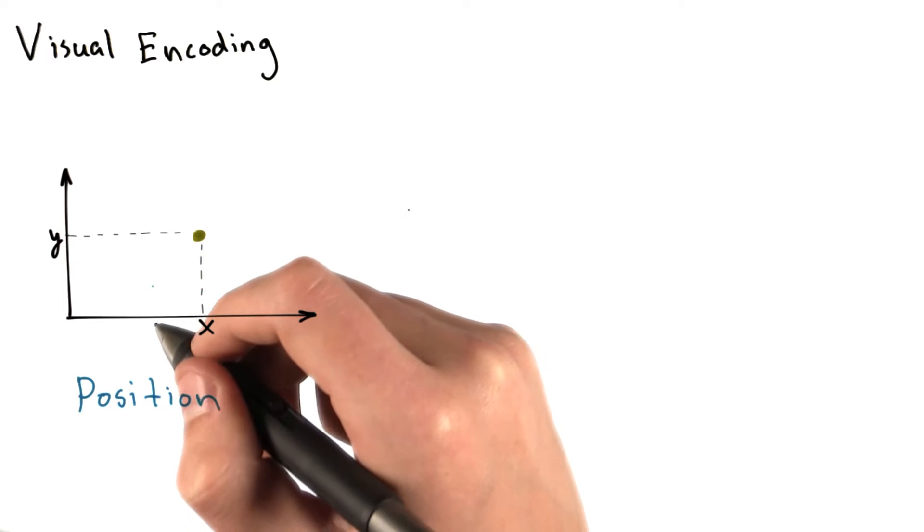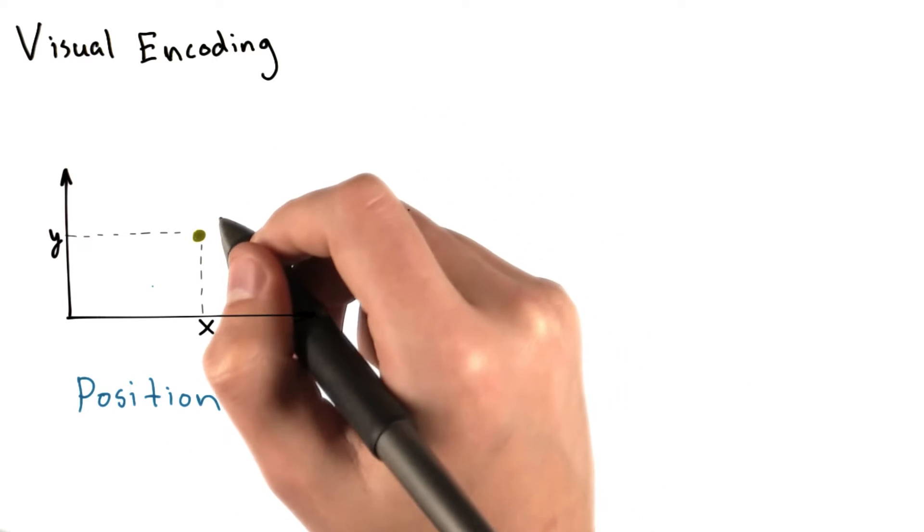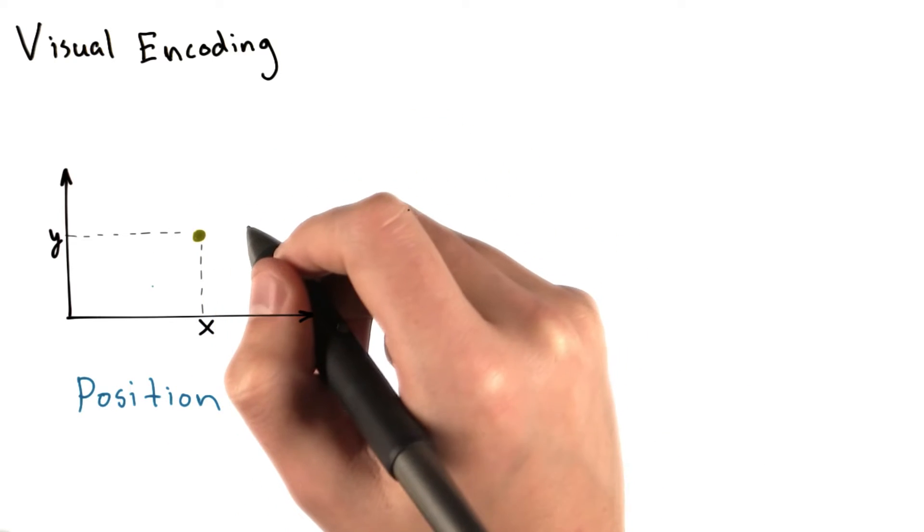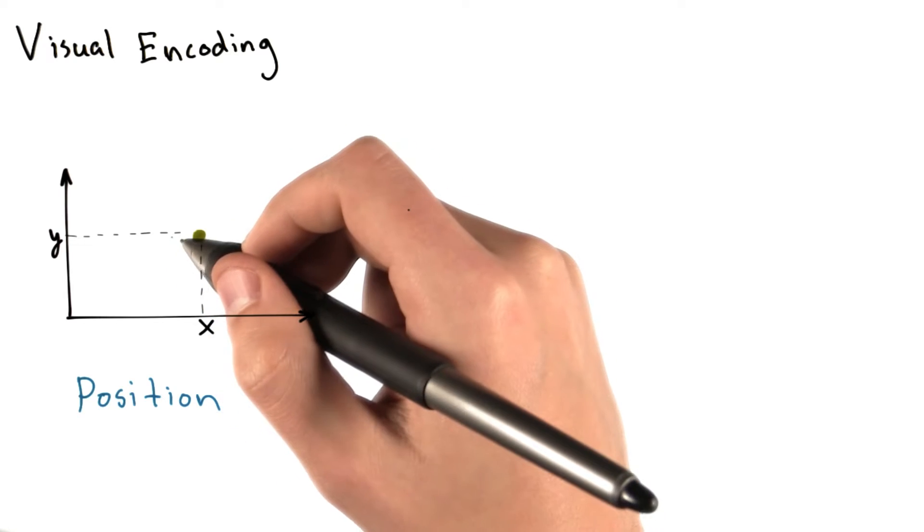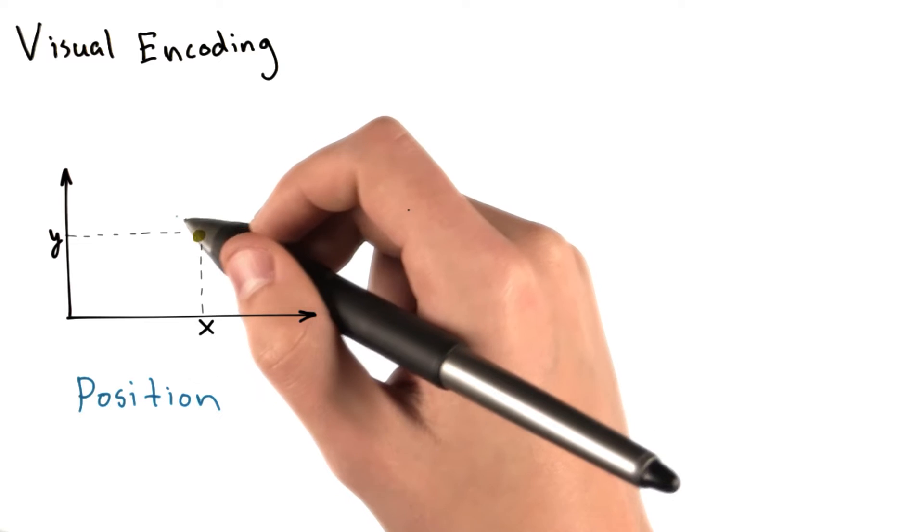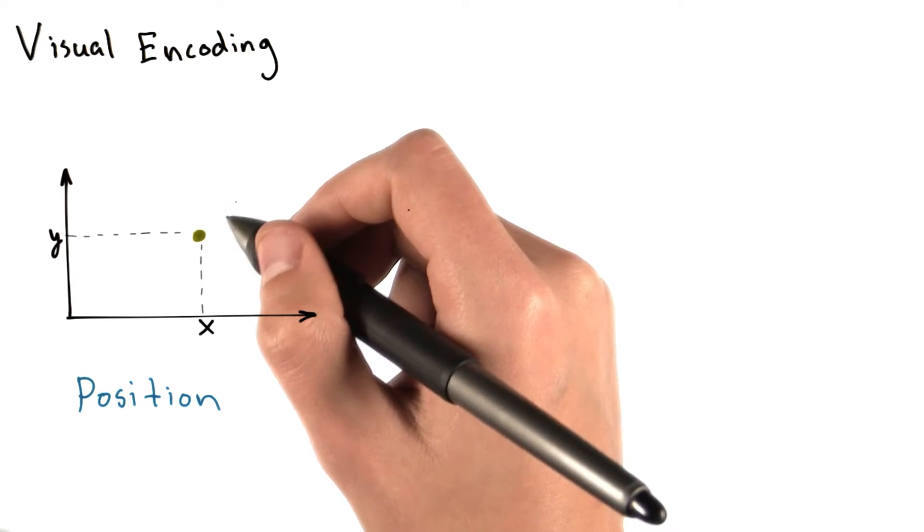Position is a useful encoding because it takes up less space than other visual cues. It's really space efficient. Each data point is simply represented as a dot. Also, points often have the same size, which allows you to easily identify trends, clusters, and outliers by plotting all of your data at once.